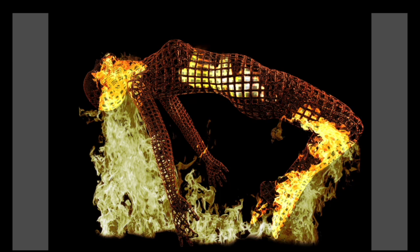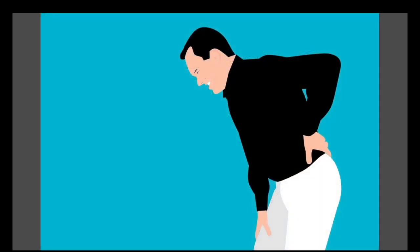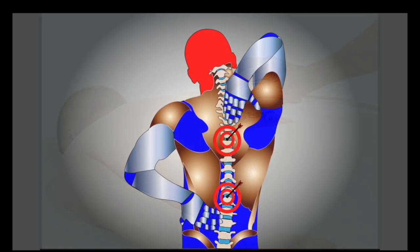A muscle strain in the lower left back occurs when the muscle fibers overstretch, leading to inflammation. In addition to pain in the lower back, symptoms may include limited range of motion, muscle spasm, and stiffness.